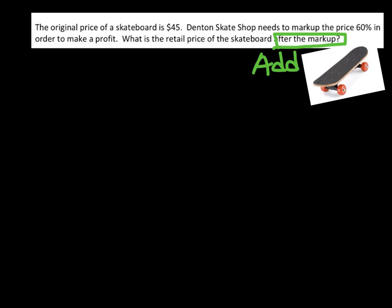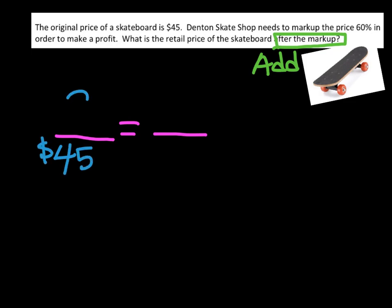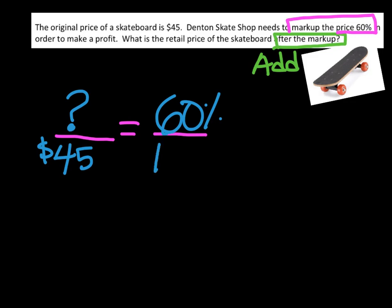To solve this problem, we're going to set up our proportion — our two fractions. The first fraction is going to have our money amounts. The original price of the skateboard is $45, and I don't know how much they're going to mark it up. I do know that the percent marked up is 60%, and percents are always out of 100.